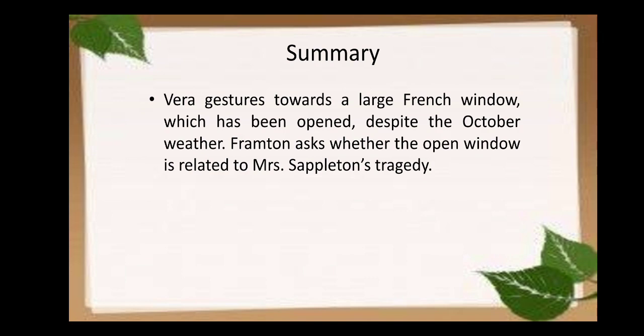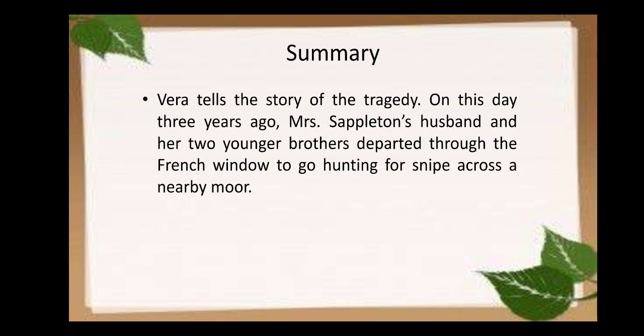Vera gestures towards a large French window which has been kept open despite the cool October weather. Frampton asks whether the window is related to Mrs. Sappleton's tragedy. Vera then narrates the whole story of the tragedy, telling him that on this day three years ago, Mrs. Sappleton's husband and her two younger brothers departed through the French window to go hunting for snipe across a nearby moor.